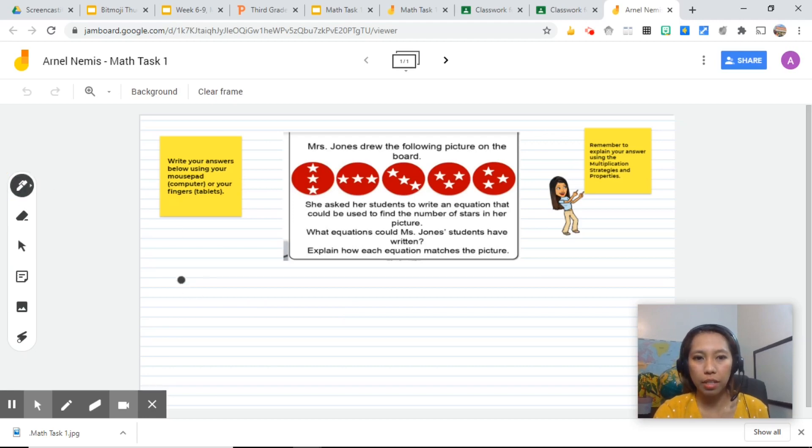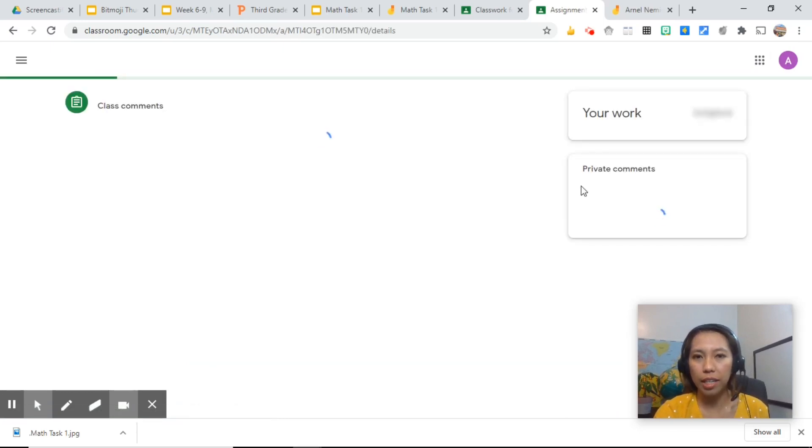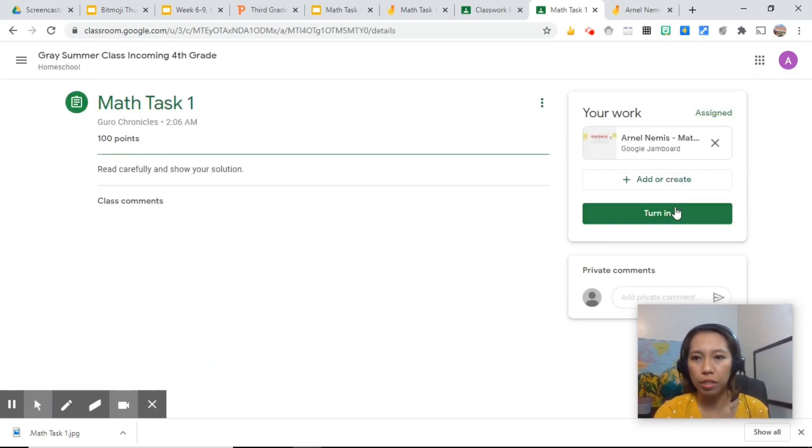If they choose the pen, they can write on it. So three, that is one equation. Another equation could be five times three equals 15. Once they are done, they go back to their Google Classroom, view assignment, and they submit their work. Turn in.